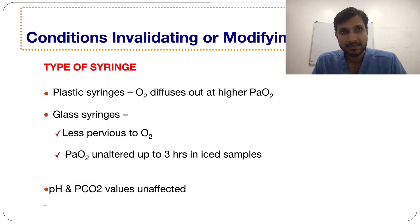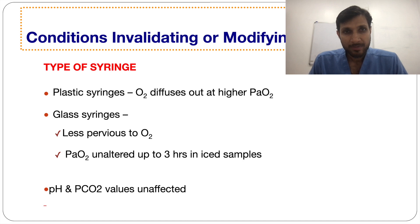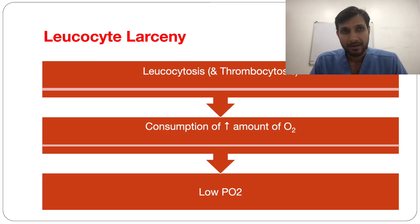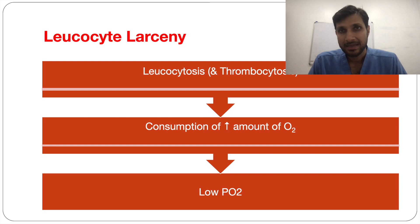The type of syringe is also important. Glass syringes are better than plastic syringes, as glass is less pervious to oxygen so that the PO2 seen in ABG drawn in glass syringes will correlate better. There is also a condition called leukocyte larceny — in leukocytosis and thrombocytosis, as in some blood cancers, there is increased consumption of oxygen so that ABG will show low PO2.